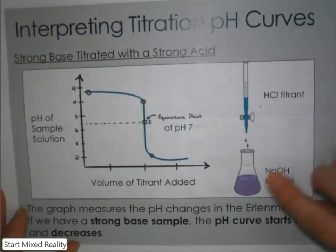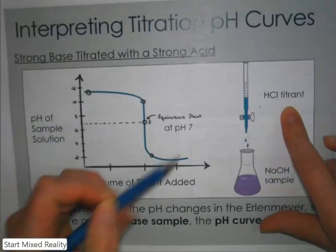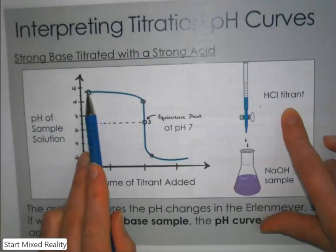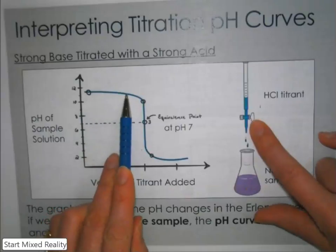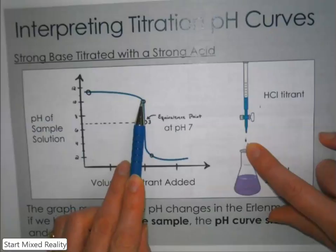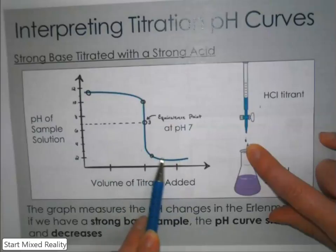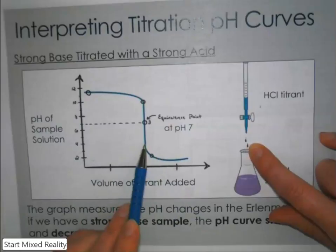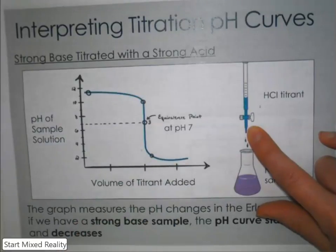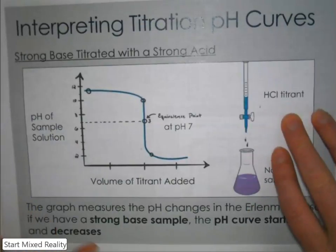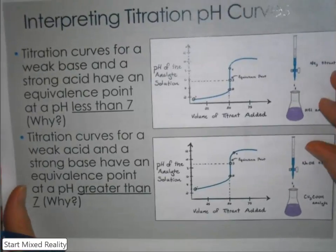If you have the opposite — a strong base as your sample and you're adding a strong acid titrant — you'll have the exact reverse shape. You start out with a high pH, it gradually decreases as you add hydrochloric acid and the pH becomes more neutral, then we see that same sharp vertical decline, and then it smooths out again, leveling off at a low pH — whatever the pH of the hydrochloric acid is.